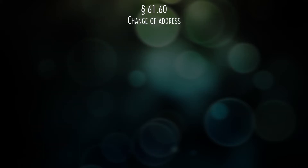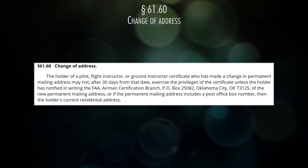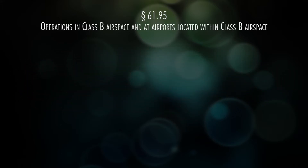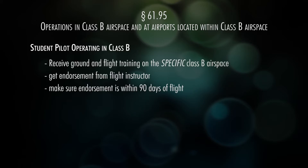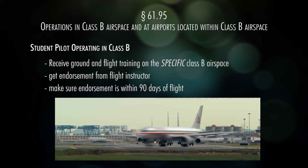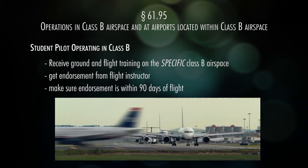If you change your permanent address, the FAA wants to know within 30 days. The address to send your change of address to is found in Part 61.60. Part 61.95 gives students permission to fly in and out of Class Bravo airspace, or do takeoffs and landings at a Class Bravo airport, but first you need flight and ground instruction from an instructor, an endorsement, and it must be within the past 90 days. Personal two cents: don't do it — it's big and scary and you're just a student pilot.